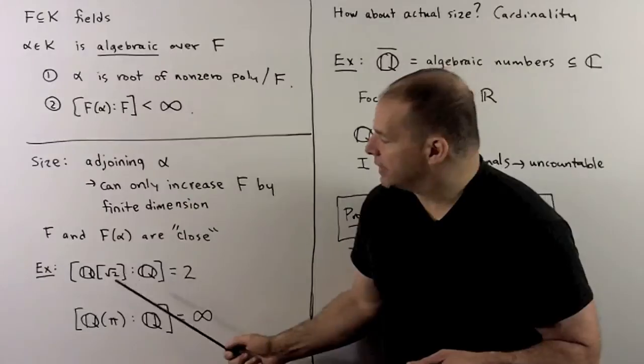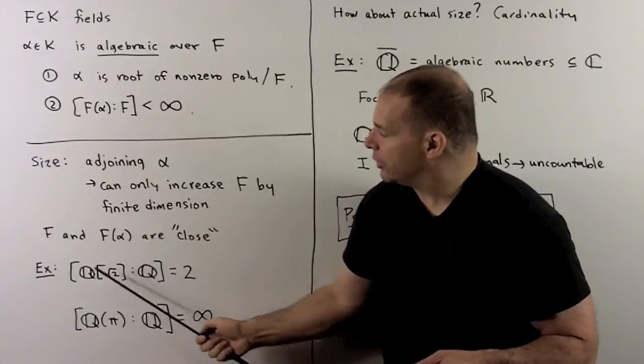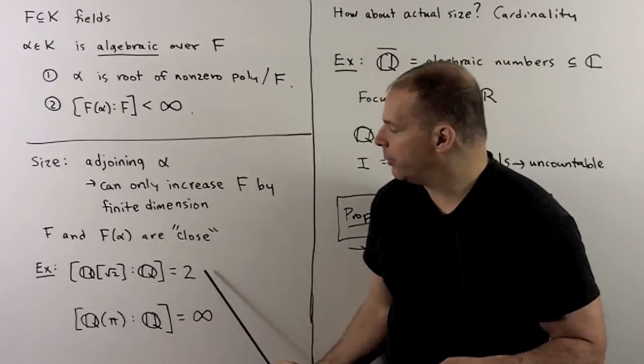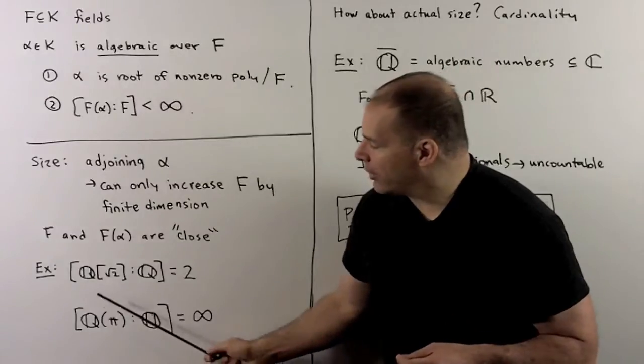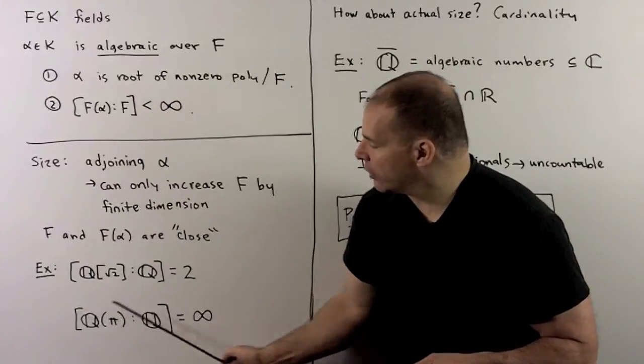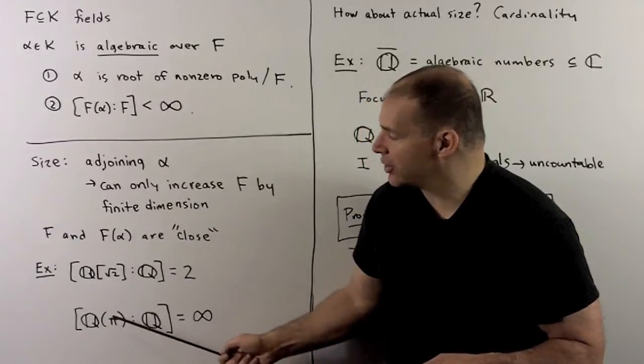For example, if I take the rationals adjoined square root of 2, the degree over the rationals is equal to 2. If I took the field generated by the rationals in pi, the degree over the rationals is infinite because pi is transcendental.